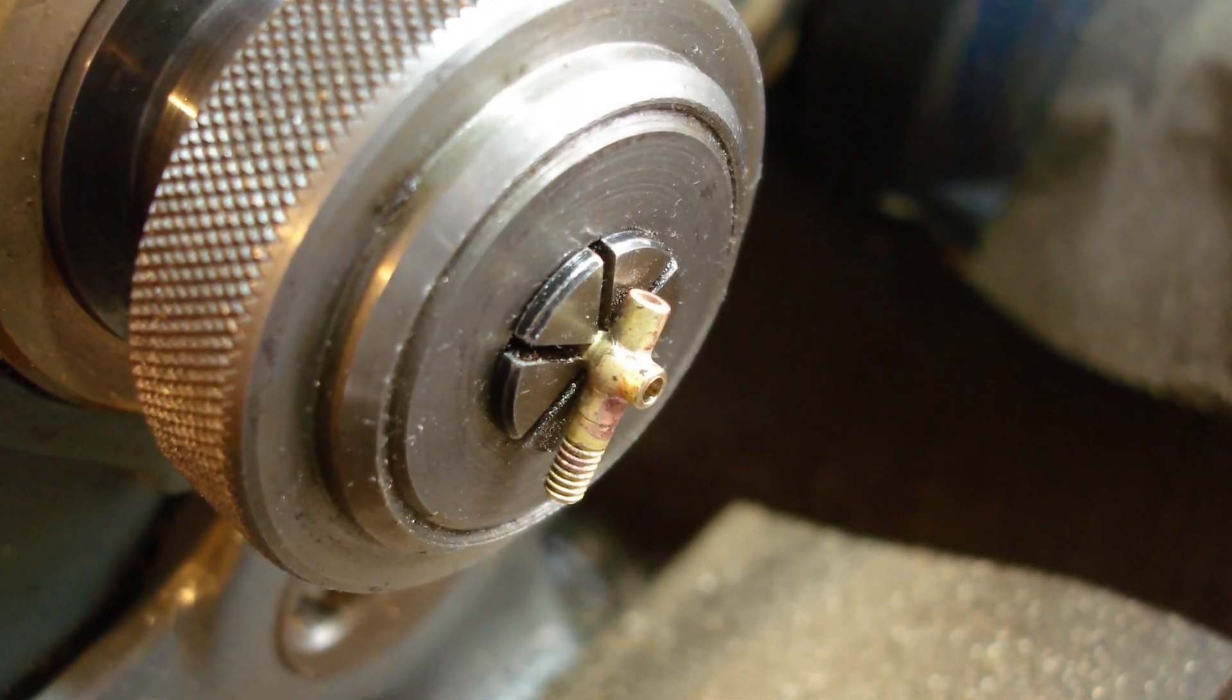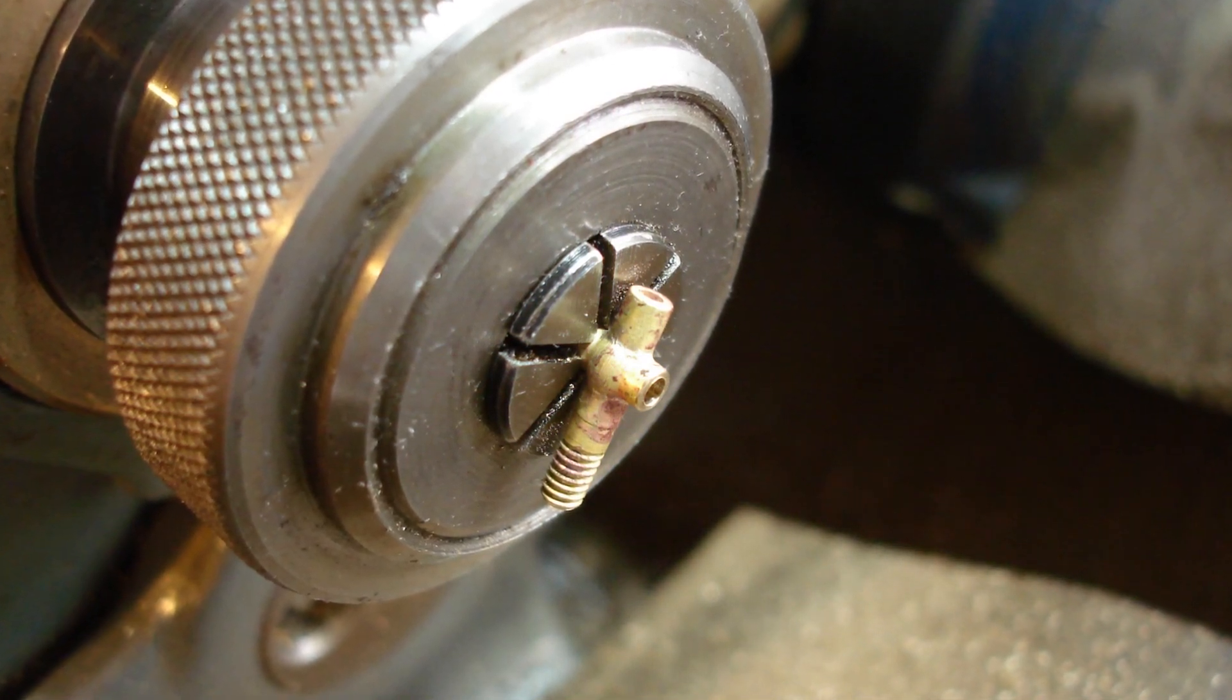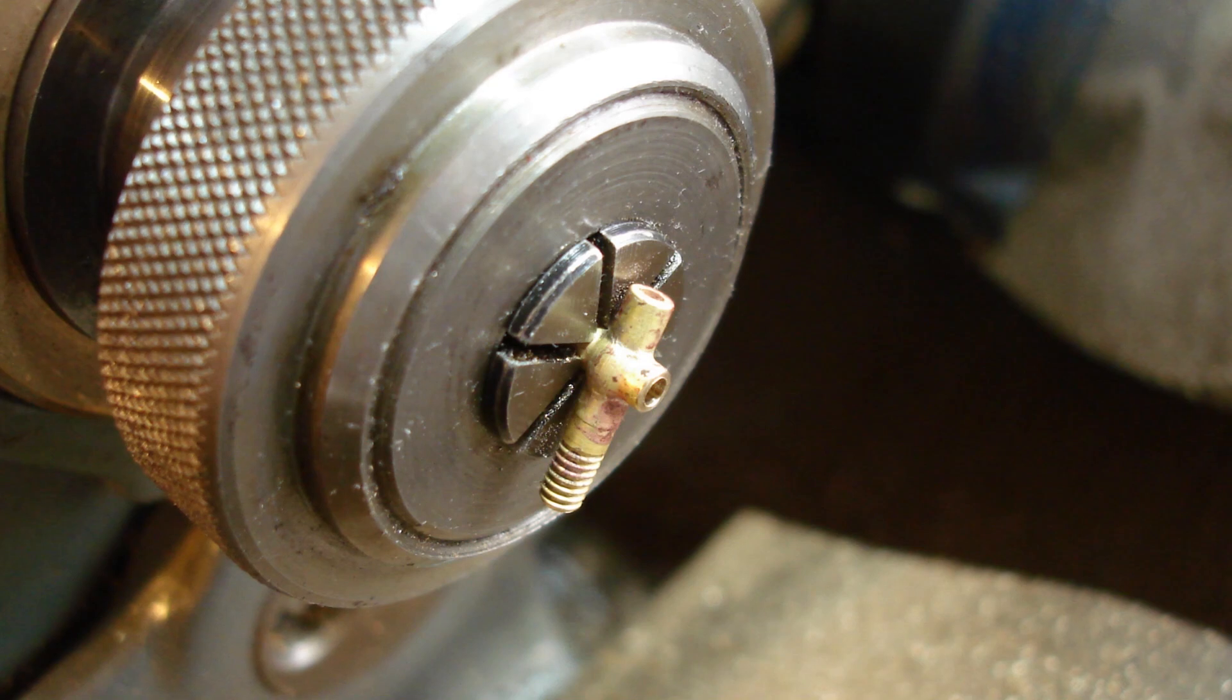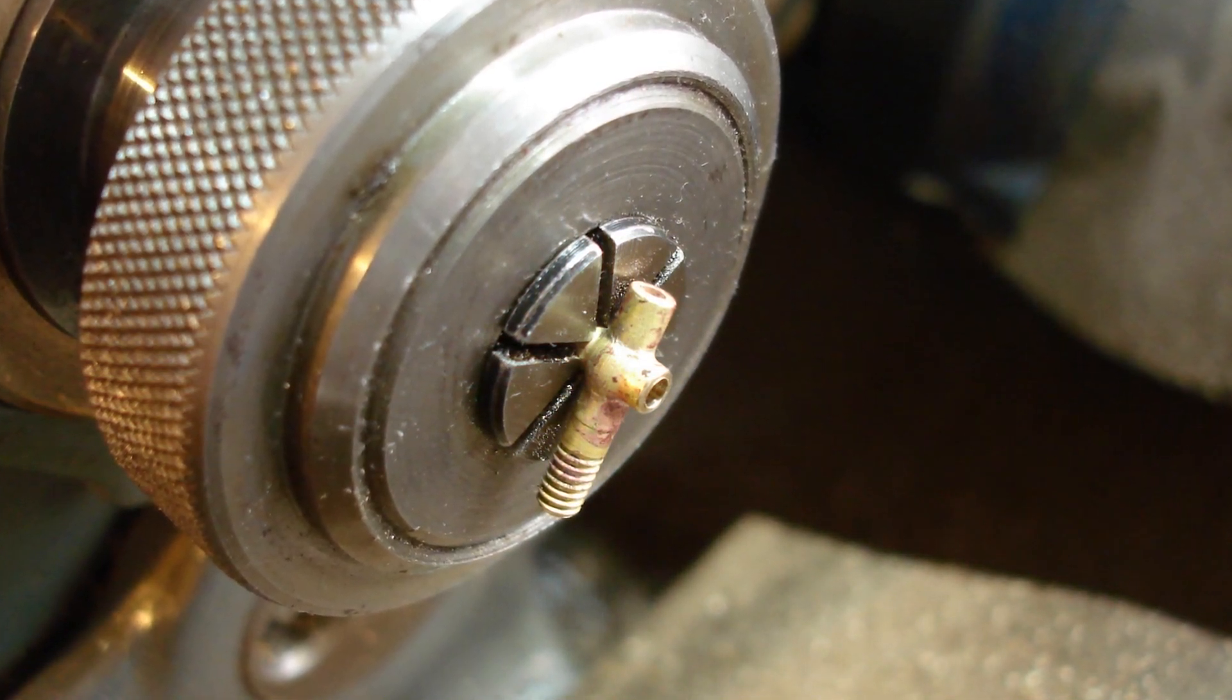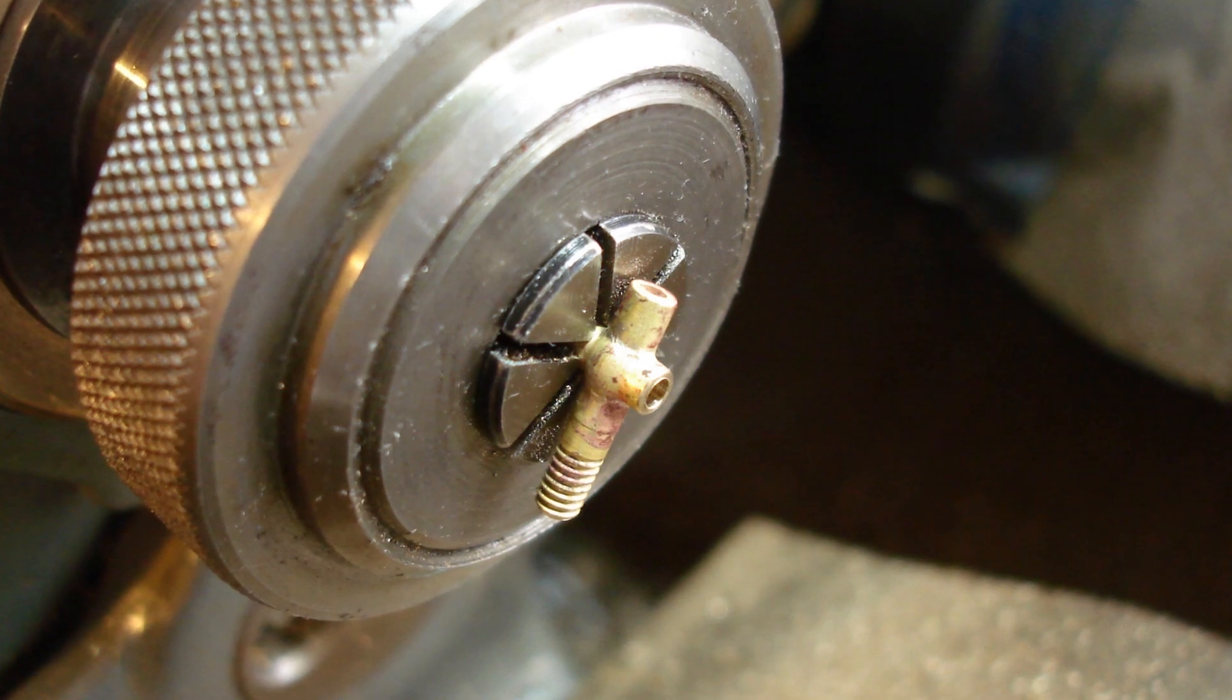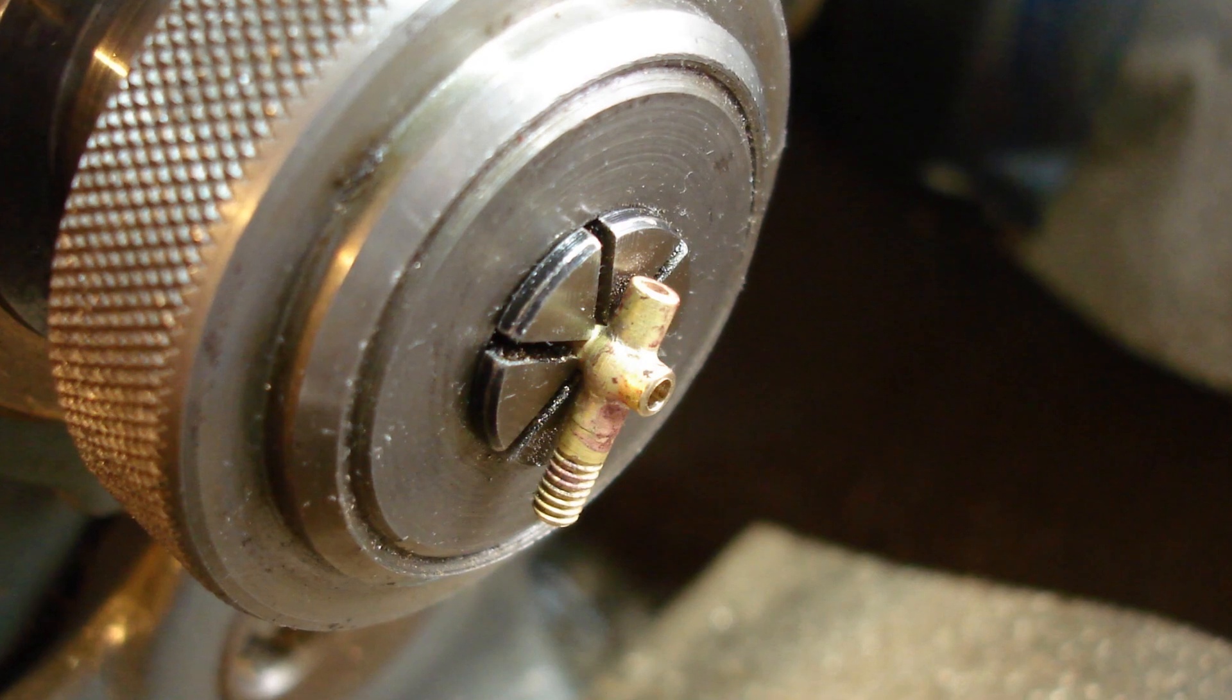The last machining operations on the body are to drill through 1.7mm clearance for 10BA threaded valve spindle, and then open out to 2mm to a quarter inch depth. The ends are faced off to length, in the correct order, otherwise I wouldn't be able to grip it in the collet chuck.